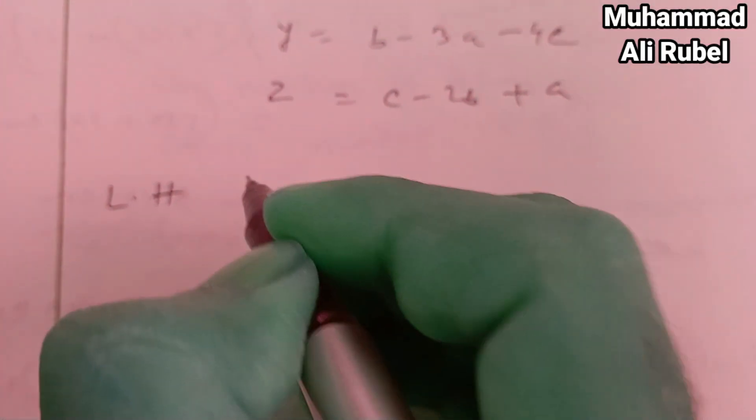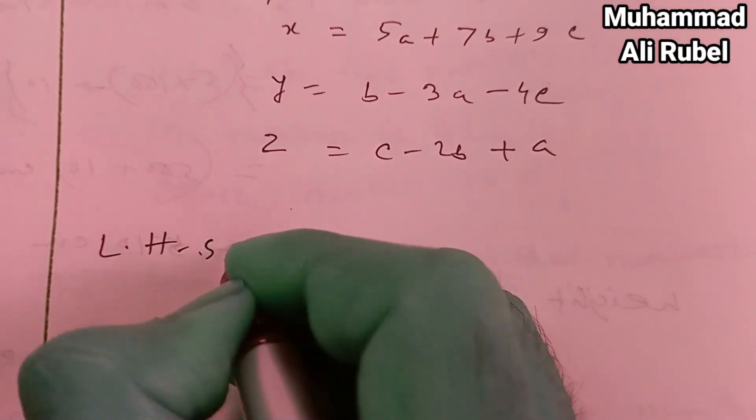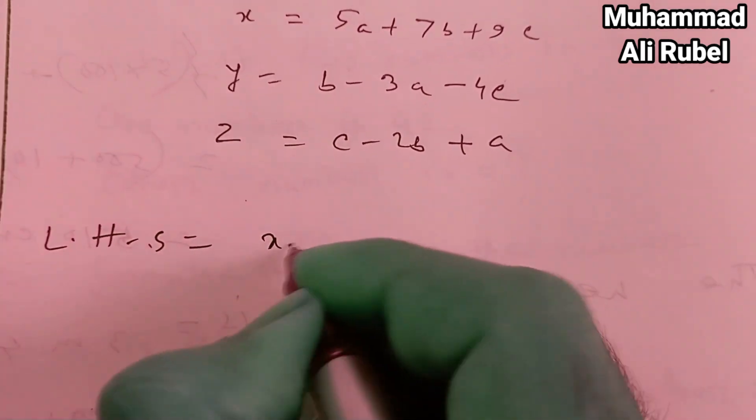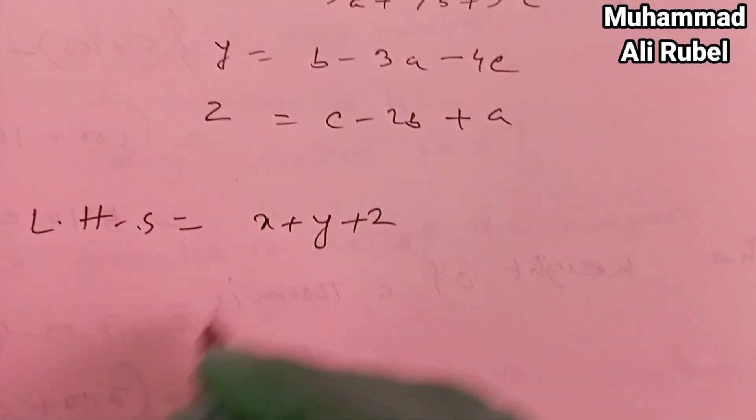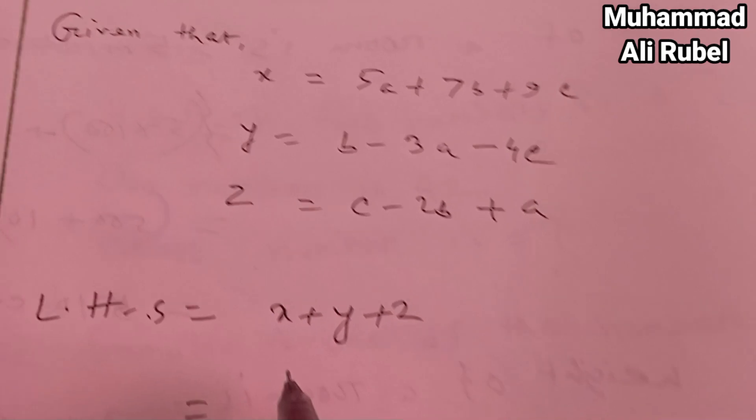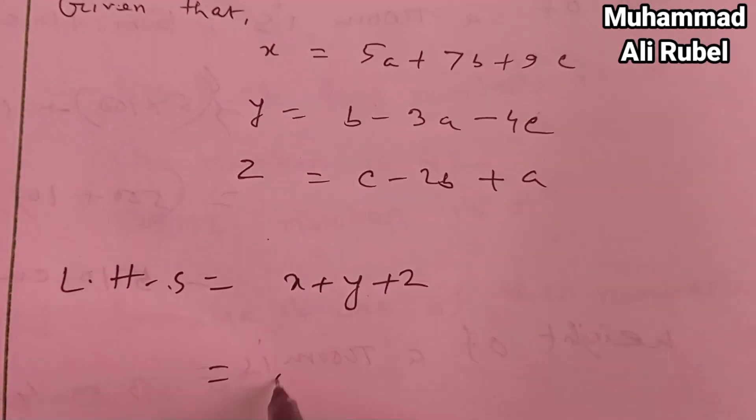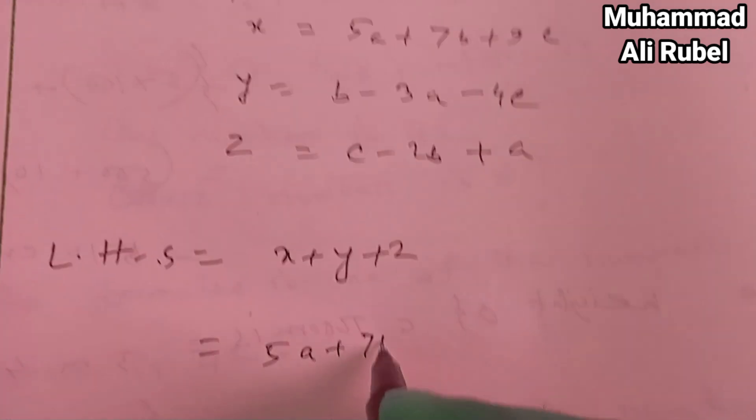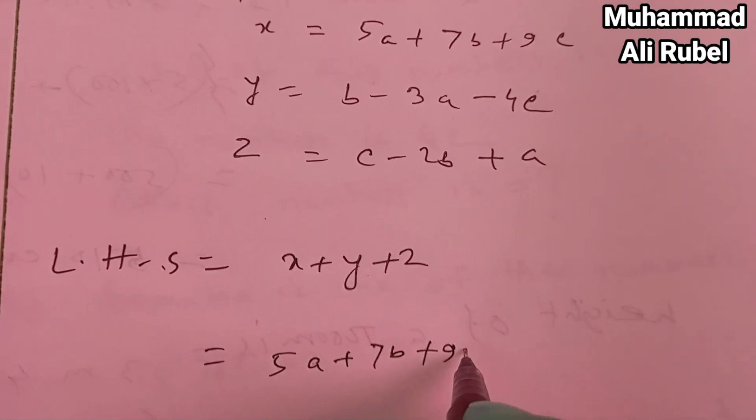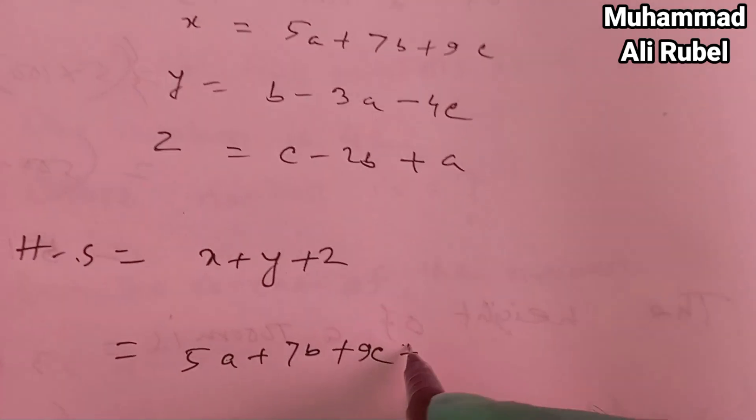So the left-hand side equals x plus y plus z. Put in the value of x, y, z: 5a plus 7b plus 9c.